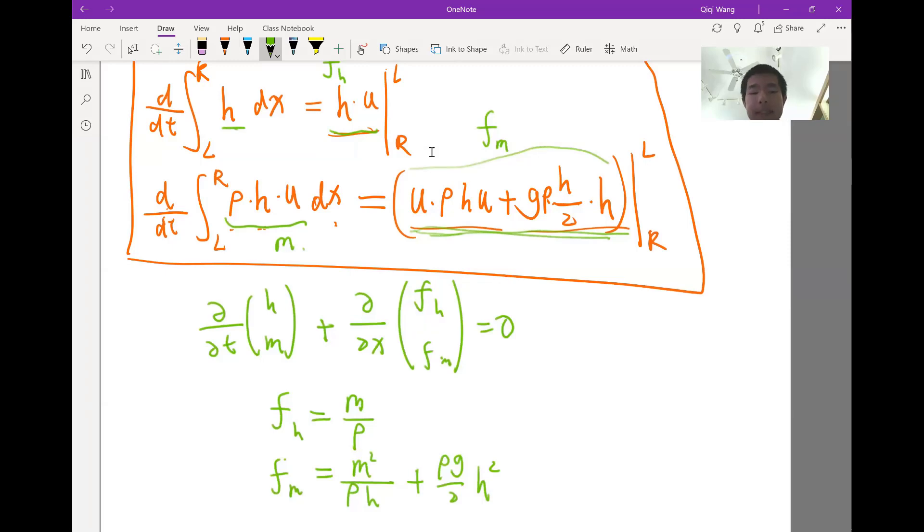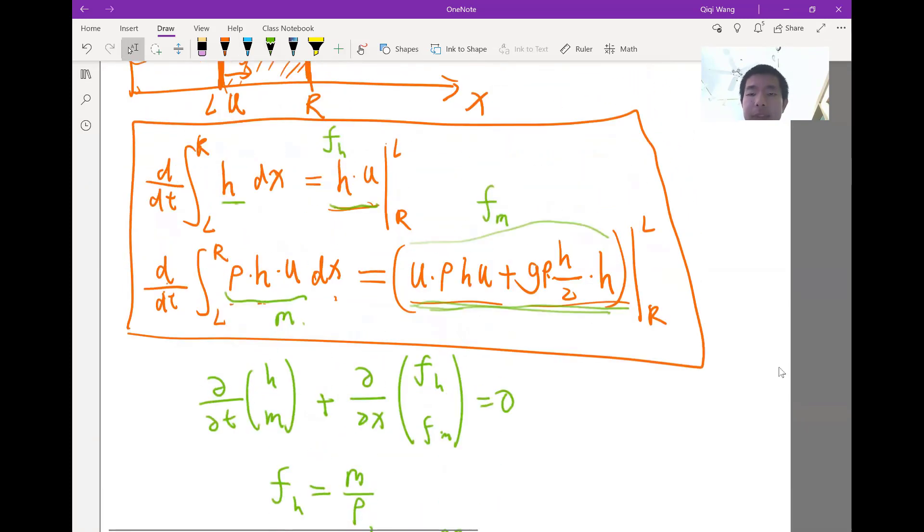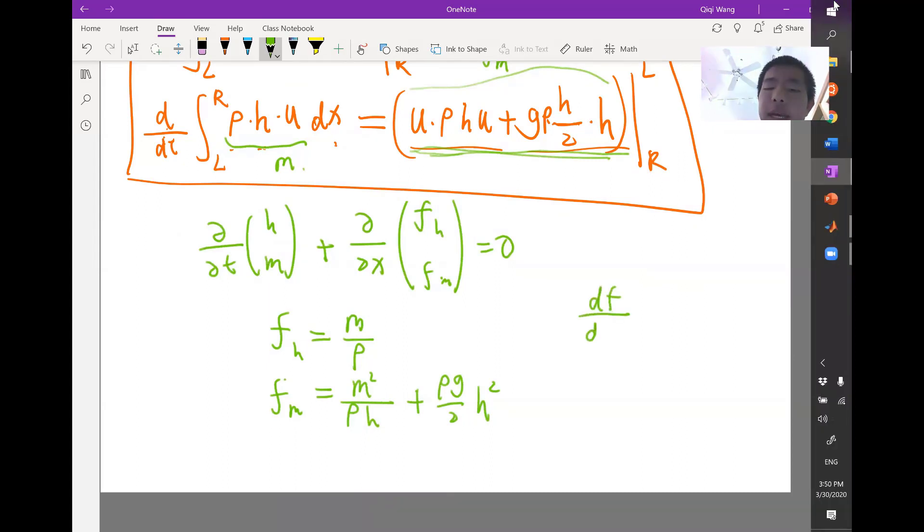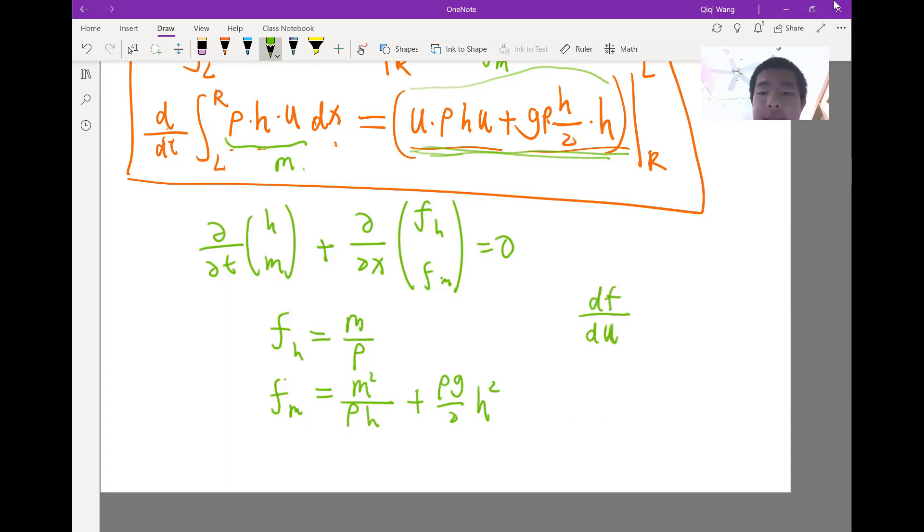In any system of conservation laws, you would have a feature like that. You have conserved variables and you have flux written as functions, sometimes complicated functions of the conserved variables. In this case, instead of having df/du as the characteristic speed as we have in previous cases, we have df/du now as a matrix, right? Because now we have two f's and we have two u's being m and h.